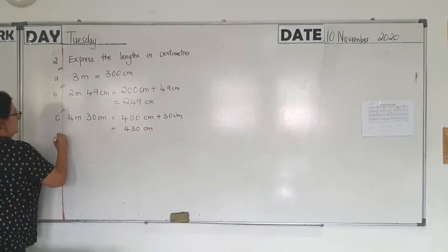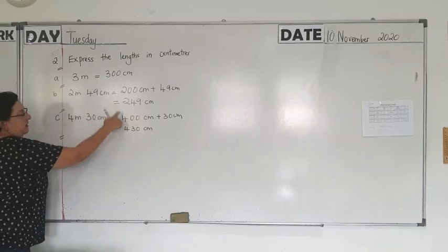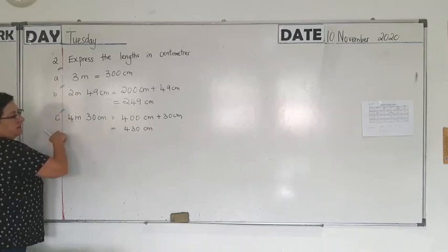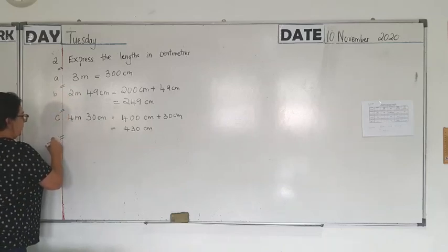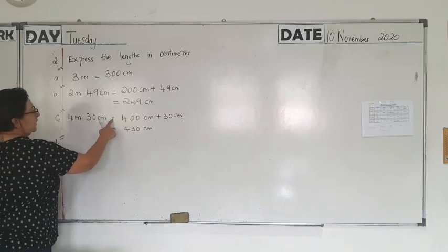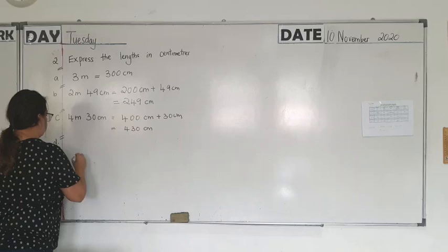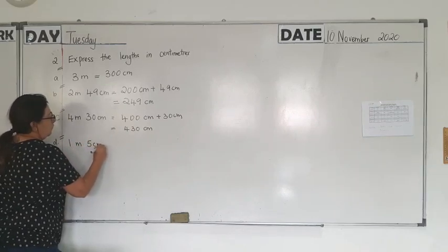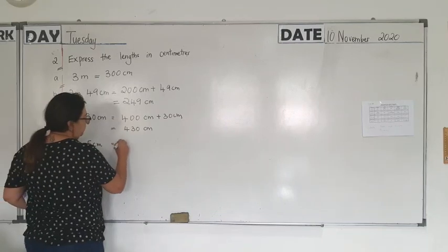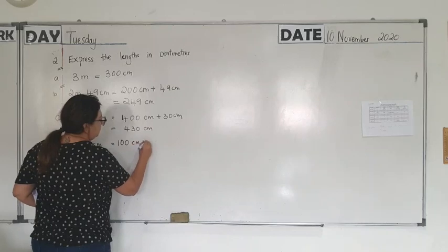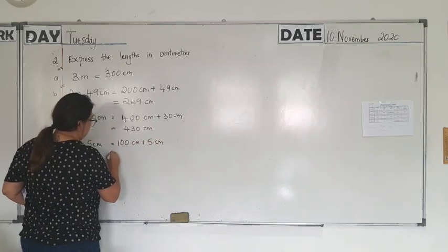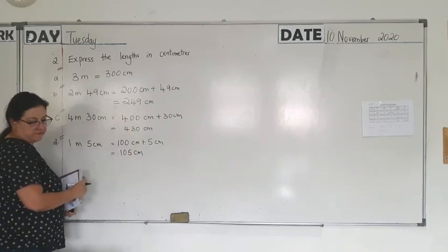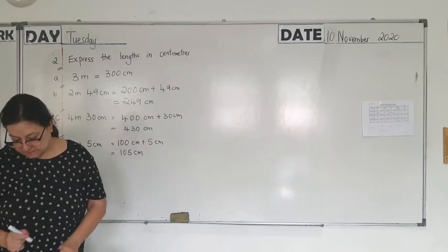Please don't leave lines here. Please do not leave lines here. Only leave lines when I am leaving lines. And the next one is D. Please make sure the equal to sign is below the equal to sign. So 1 metre is 100 cm, 5 cm plus 5 cm. So 1 metre is 100 cm.